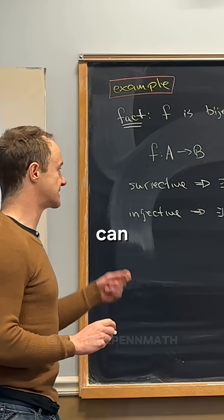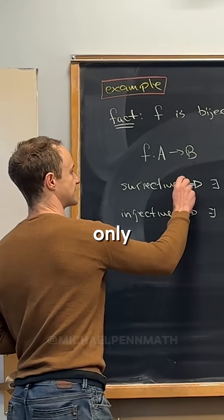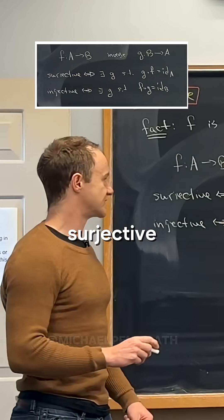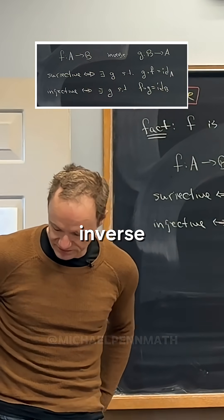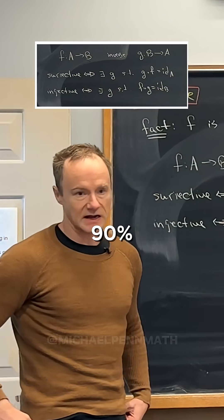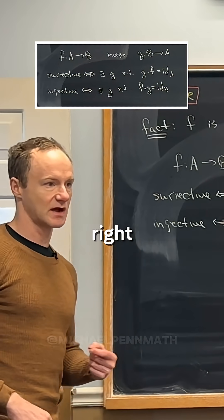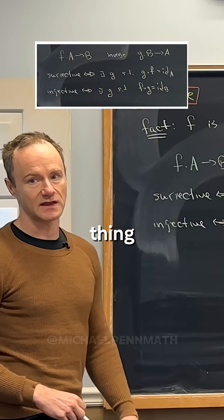And then you can see kind of immediately, these are if and only if statements actually. If it's surjective, the left inverse is going to be injective. And if it's injective, then the right inverse is going to be surjective. I'm like 90% sure I got these sides right, but there's like a sided thing here.